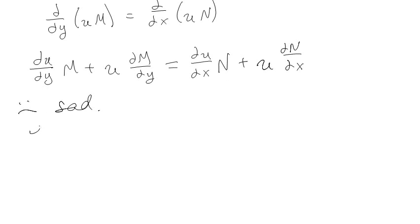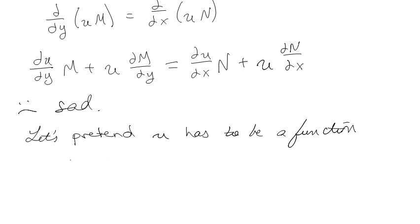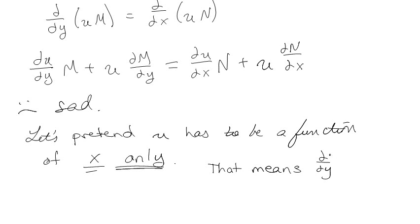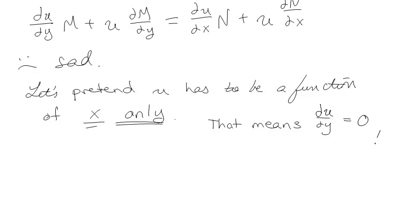Before we said that u could be anything, but let's pretend that u has to be a function of x only. If u is a function of x only, then the partial derivative of u with respect to y has to be zero. We care about this because if we look at our equation, du/dy is 0, so that term drops out.